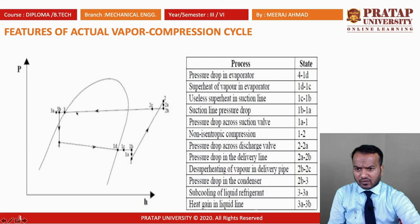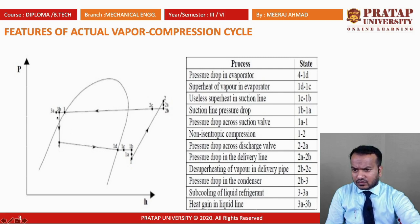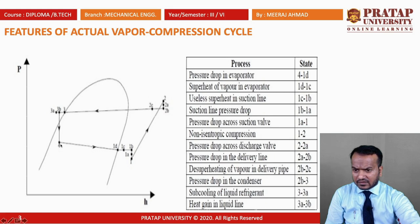From point 2c to 3 there is a constant pressure heat rejection process in the condenser, with some small pressure drop also present. Then from point 3 to 3a there is sub-cooling in the condenser. From point 3a to 3b there is further sub-cooling in the pipeline, where some heat from the surroundings enters the pipe slightly increasing the temperature. From 3b to 4 there is expansion in the expansion device.